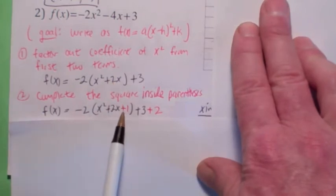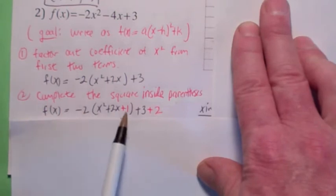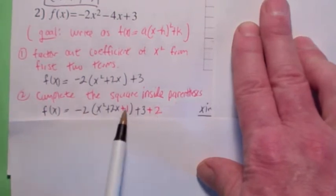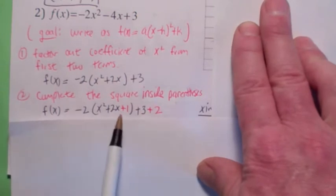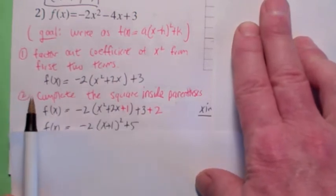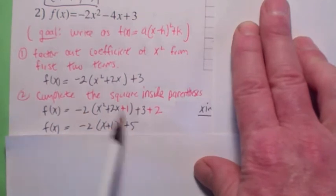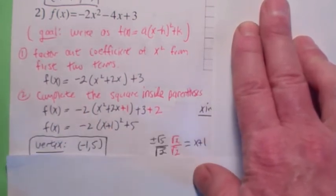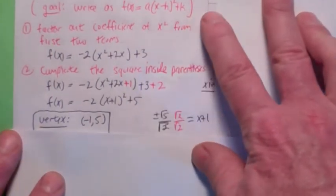So you add 1 inside the parentheses. However, notice this negative 2 out here — you really subtracted 2 when you did that, so you have to counterbalance that by adding 2 on the outside so you don't change the function. Now that this is a perfect square, it becomes negative 2 times (x + 1) squared plus 5. Once it's written in this form, you can identify the vertex: the vertex is the point (−1, 5).